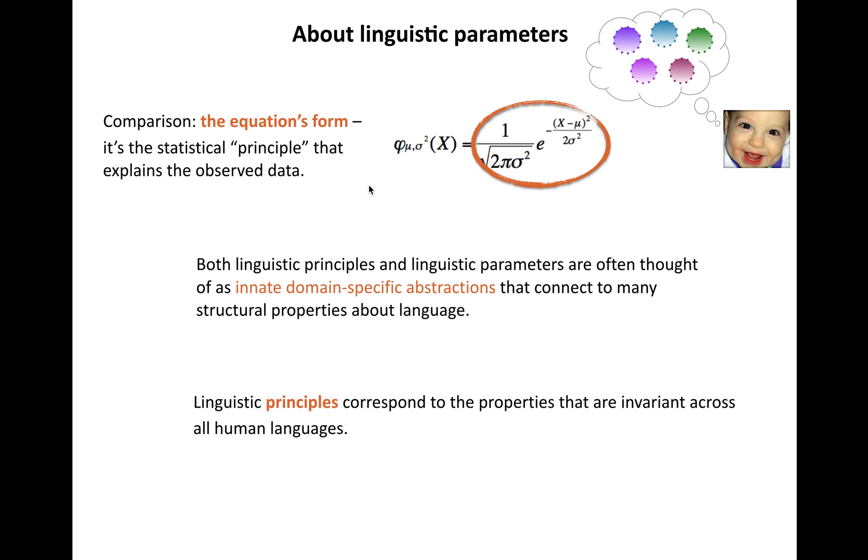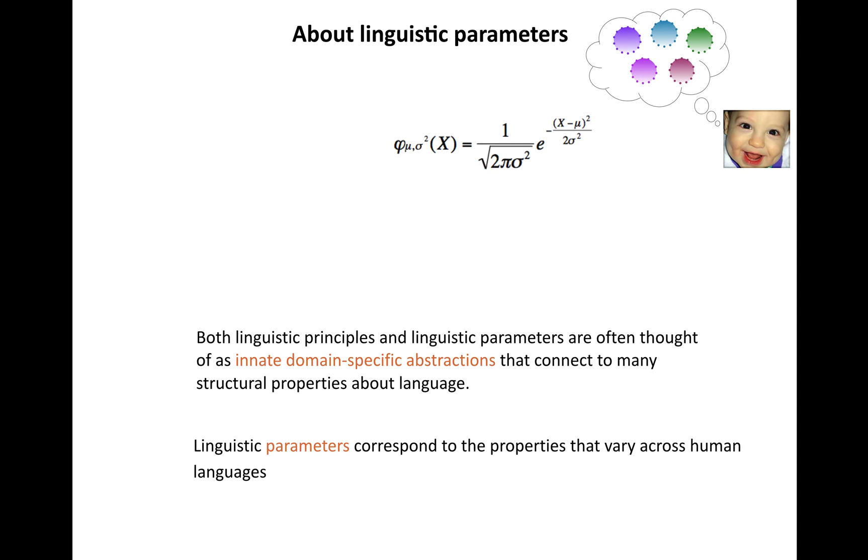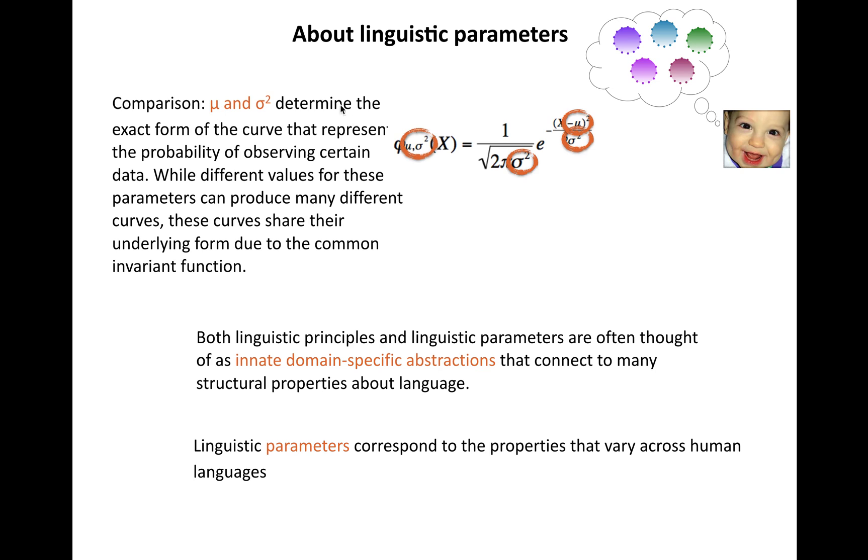The parameters correspond to the properties that vary, that determine the exact implementation of that shape across human languages. Here that would be μ and σ² to determine the exact form of the bell curve.